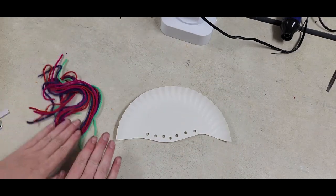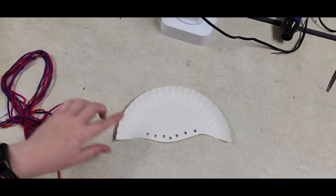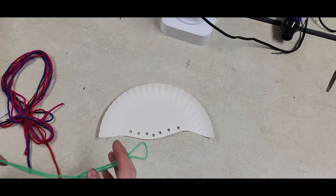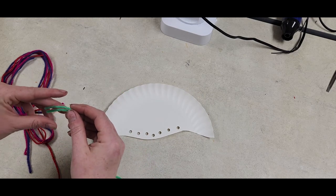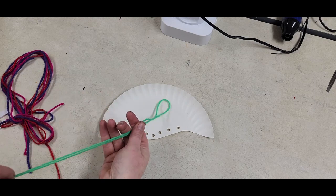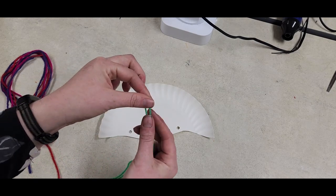We're going to start by attaching our yarn. You should have seven strings of yarn, one for each hole in your jellyfish. The way I like to attach my yarn is by folding it in half so that I have this little loop here.